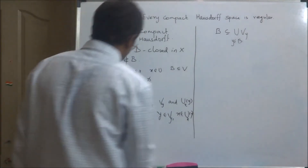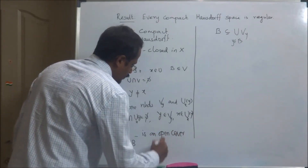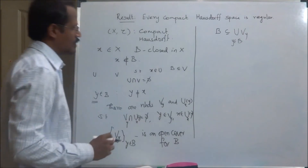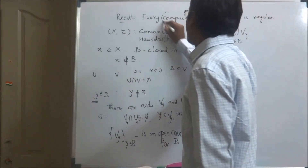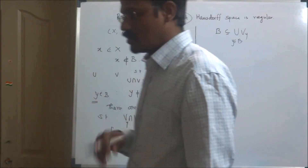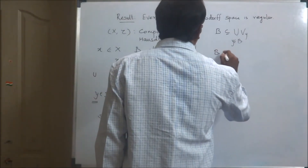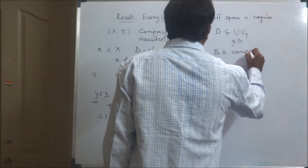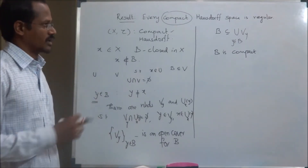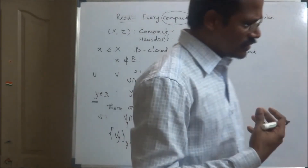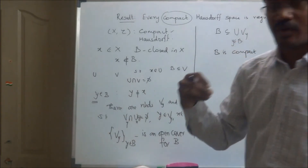The collection {V_y} is an open cover for the set B, where B is a closed set in X. Since X is also a compact space, B is a closed subset of a compact space. Therefore, by the theorem that every closed subset of a compact space is compact, B is compact. Since there is an open cover for B, there exists a finite subcover for B.